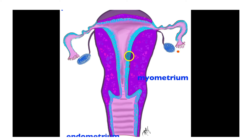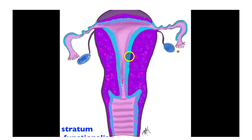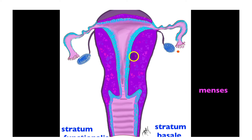The endometrium is composed of two layers: the stratum functionalis and the stratum basale. The stratum basale is closer to the myometrium and contains stem cells that allow for regeneration of the stratum functionalis. The stratum functionalis is going to be shed off every 28 days in sexually mature females — this is known as menses. Once the stratum functionalis sheds off, the stratum basale produces another stratum functionalis. We'll talk more about menses in a later video.